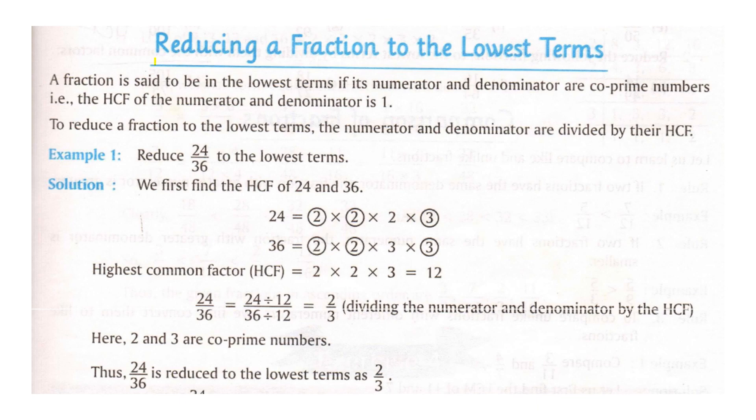If you remember we have done questions based on this earlier in exercise 2 also. So in order to reduce a fraction to lowest term we divide the numerator and denominator by the HCF of the given numbers. Let us try to see it with one example.